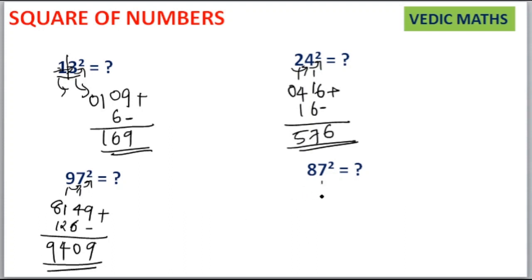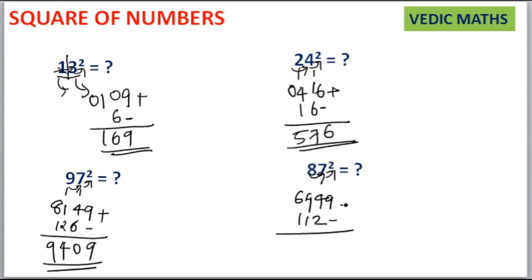The same way for 87 squared: 7 squared is equal to 49. 8 squared is equal to 64. Then 8 into 7 is equal to 56, and 56 into 2 is equal to 112. Leave the unit place, write 112 here, then add together. You will get 7569 as your answer.